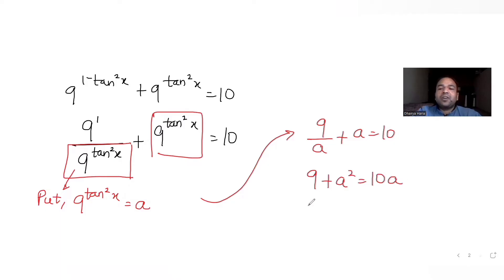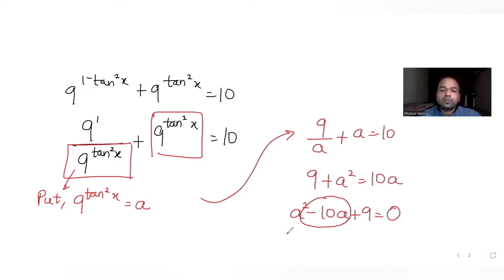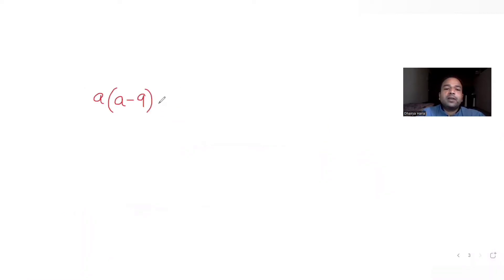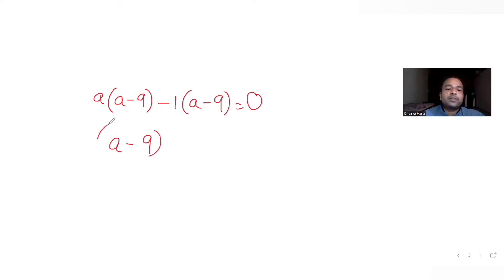Solving further: multiplying through gives a² - 10a + 9 = 0. Factoring by splitting the middle term: a² - 9a - a + 9 = 0, which factors as (a - 9)(a - 1) = 0.